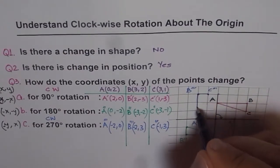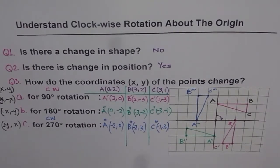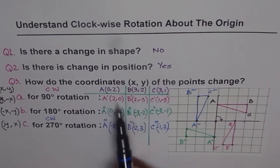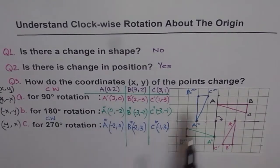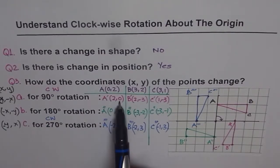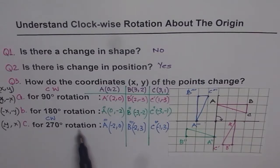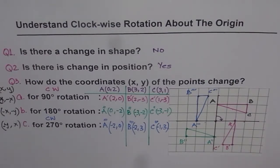Joining those points, this is the image after 270 degrees clockwise rotation. So to recap: for 90 degrees clockwise rotation, swap x and y and make y negative; for 180 degrees, just change both signs; for 270 degrees, swap x and y and make x negative. We have another video where we will discuss counter-clockwise rotation about the origin and take all the cases together. Thank you.